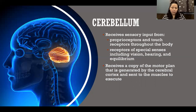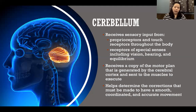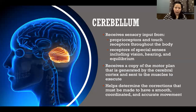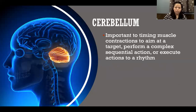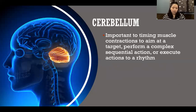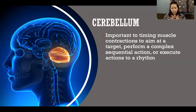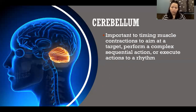The cerebellum receives a copy of the motor plan generated by the cerebral cortex that was also sent to the muscles, and it helps determine the corrections needed so that we can have smooth, coordinated, accurate movement. The cerebellum is also important in timing muscle contractions to aim at a target, perform a complex sequential action, or execute actions to a rhythm — for example, clapping to the beat or dancing to the beat.